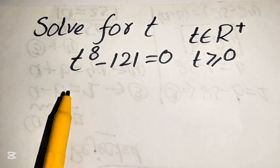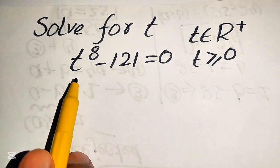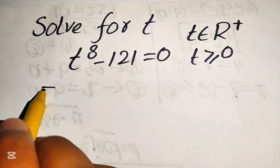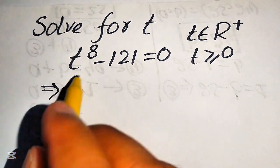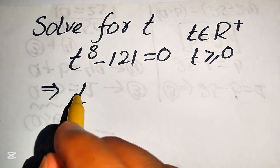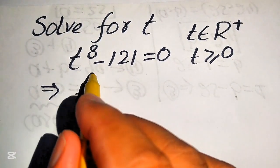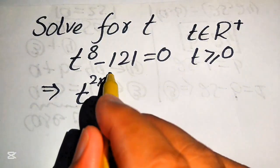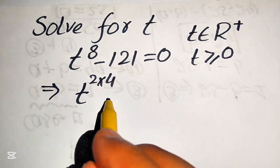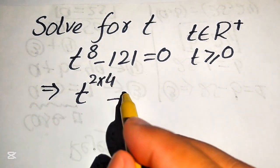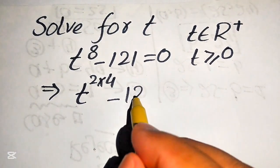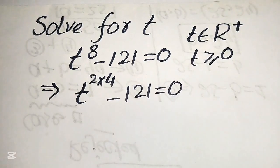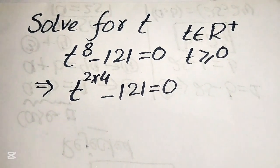First we need to focus on the exponent of this term. We can rewrite the exponent of t — since it is 8, we write it as 2 times 4, which gives 8 — so we have t to the power of 2 times 4, minus 121, equals 0.